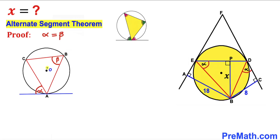Let's connect the center O with points A and C. We can see that OA and OC are radii of the same circle, so these two side lengths are congruent. Therefore triangle ACO is going to be an isosceles triangle, so this angle has got to be equal to this angle — if this angle is x then this angle is x as well.